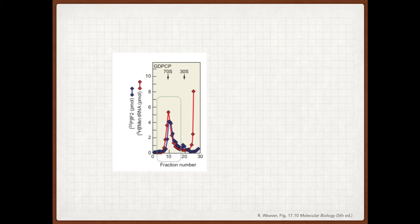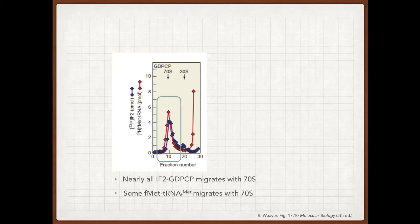We can see that we have this strong peak around fraction 10, which is where 70S migrates, and we can see that almost all of the IF2-GDPCP migrates along with 70S. We can see we also have a substantial amount of FMET-tRNA-FMET migrating with 70S.